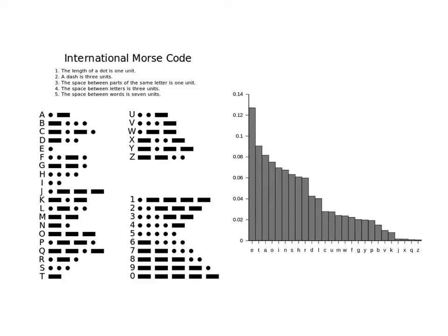One important characteristic of Morse code is its encoding efficiency. On the right-hand side, you see a sorted frequency graph showing how frequently each letter of the English alphabet occurs in typical English text. The most frequent letter by a considerable margin is the letter E, followed by the letter T. In Morse code, these highly frequent letters are encoded using short sequences. The letter E is represented by a single dot, while the letter T is represented by a single dash.